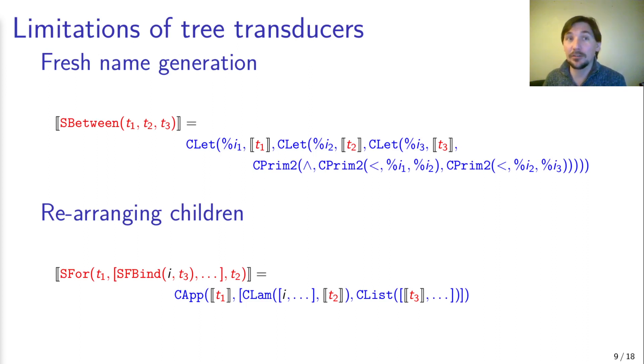Krishnamurti and his colleagues also suggested an initial search space for these compositional translations, tree transducers. They highlighted with the pigeon languages however, that the tree transducers model is too limited. For example, it cannot express fresh name generation or rearranging of children.